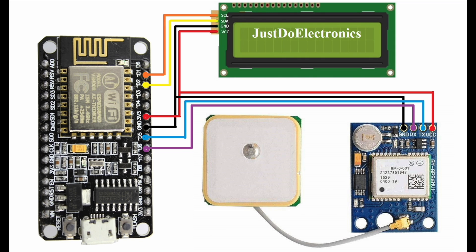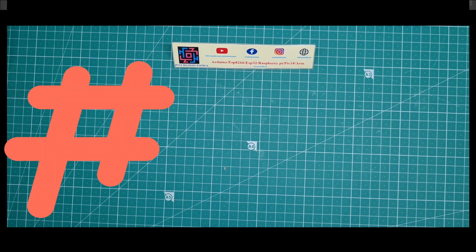For the GPS module I use the NEO-6M. Ground connects to the NodeMCU ground, the RX pin connects to D6, the TX pin connects to D5, and VCC connects to the NodeMCU VCC. This is the final circuit diagram of the project. If you want the circuit diagram, please visit my website.